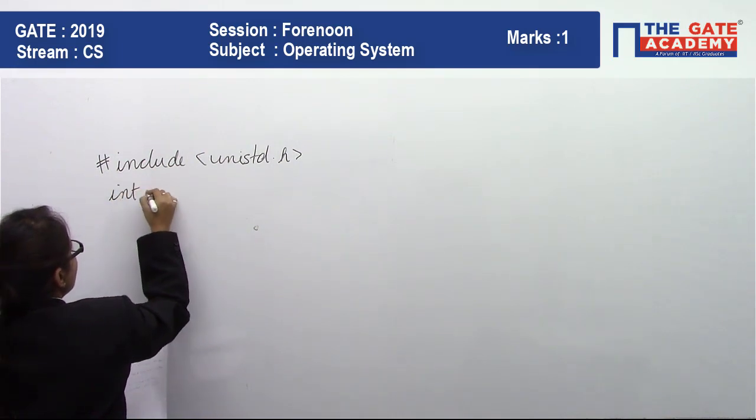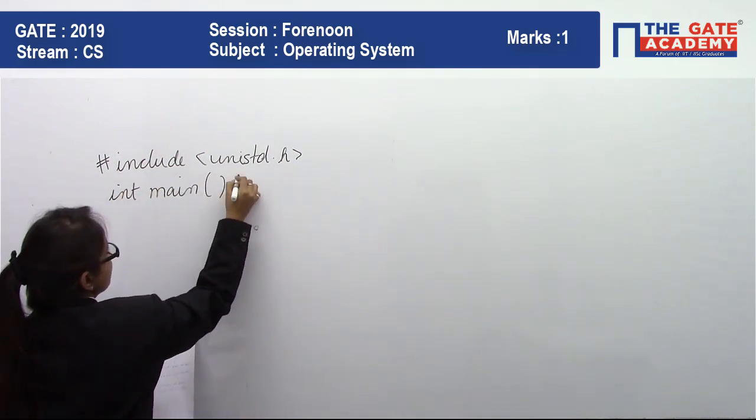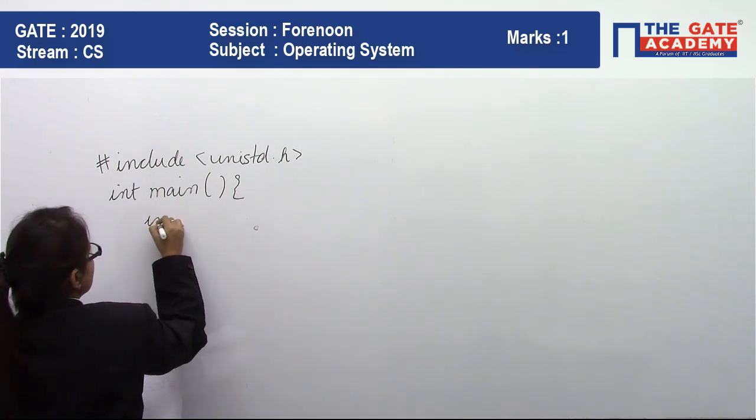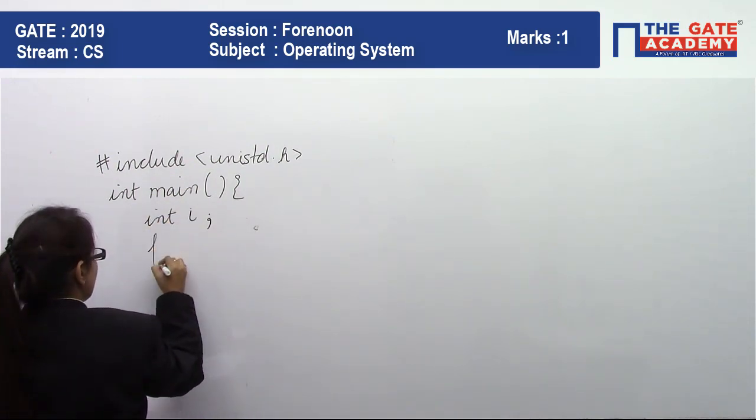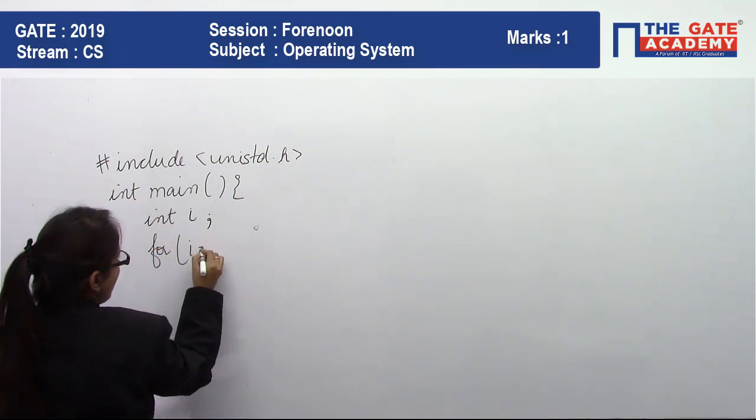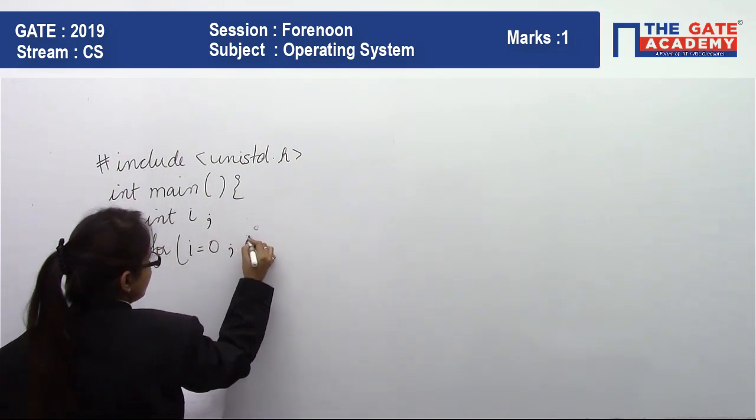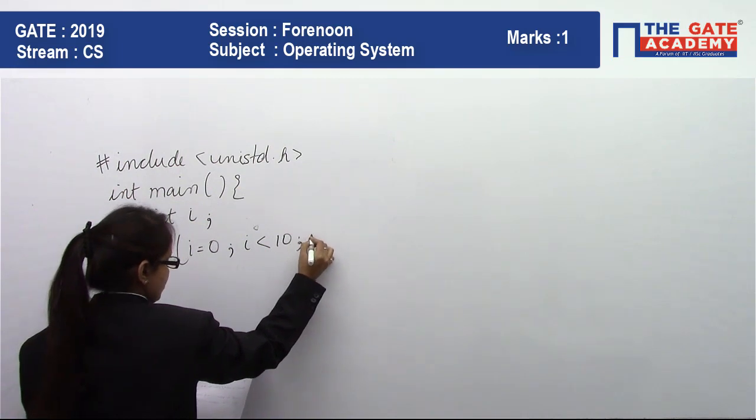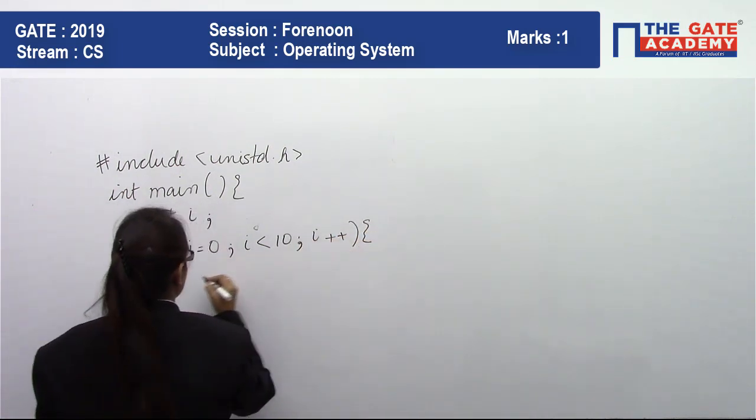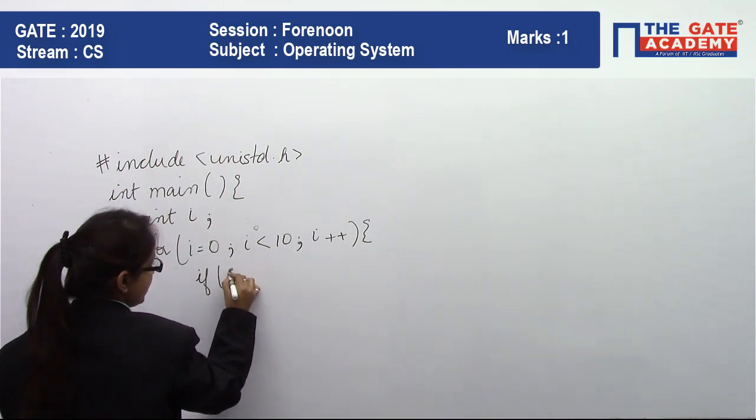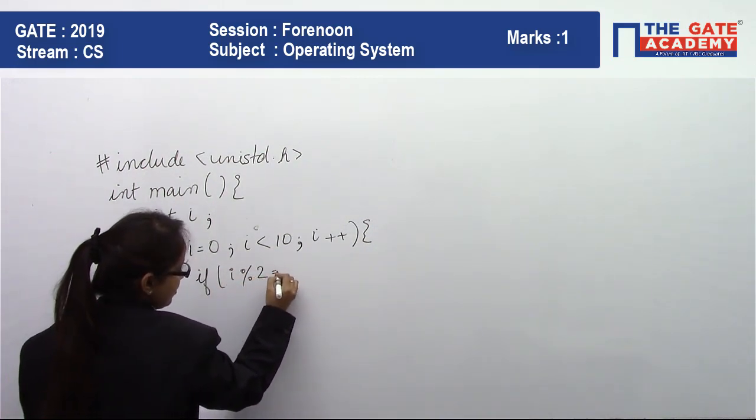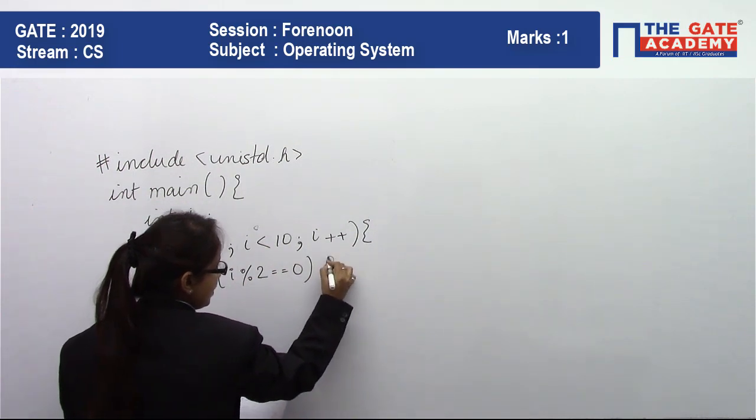int main() { int i; for (i=0; i<10; i++) { and in this one, if (i%2 == 0) then fork();